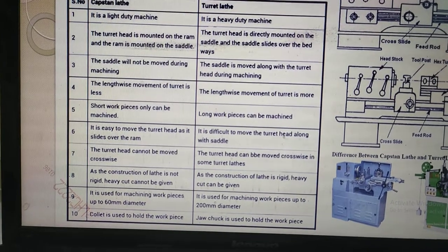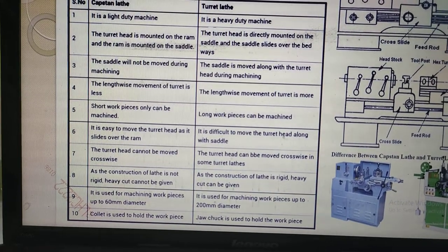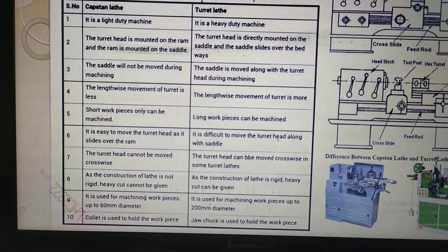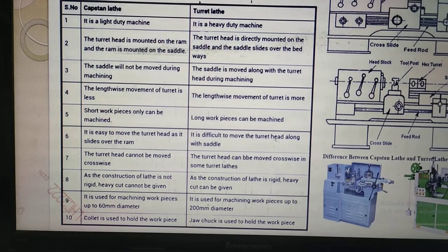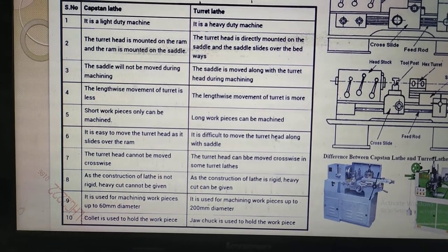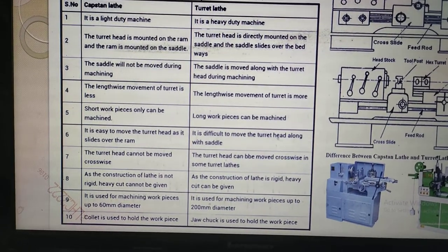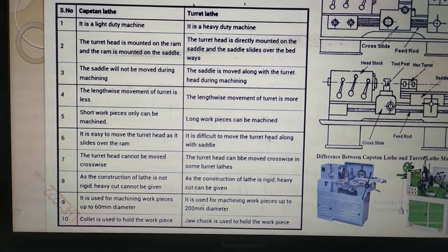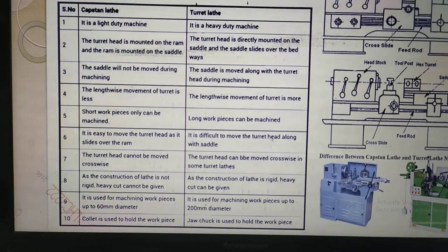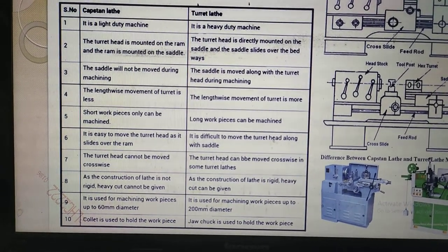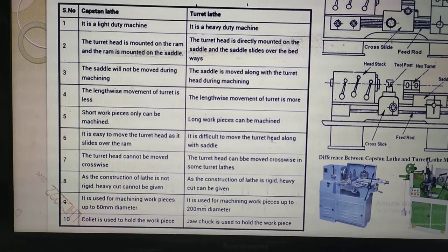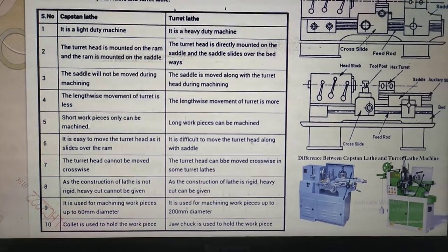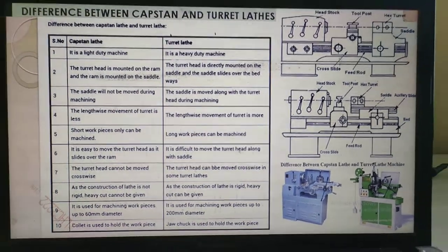In capstan lathe machines we can machine workpieces up to 60mm diameter, whereas in turret lathe machines we can machine workpieces up to 200mm diameter. For holding workpieces, capstan lathe uses collet chucks, whereas turret lathe uses 3-jaw chucks and 4-jaw chucks. This is the difference between capstan lathe and turret lathe machines.